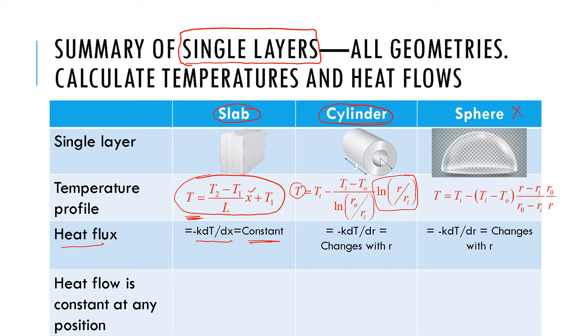Then if we do heat flux for the cylindrical coordinate, it's minus k dT/dr. So if you take dT/dr here, it's going to have a whole lot of constants times one over r in there because of the natural log of r. So the temperature, or sorry, the flux is going to change with r.